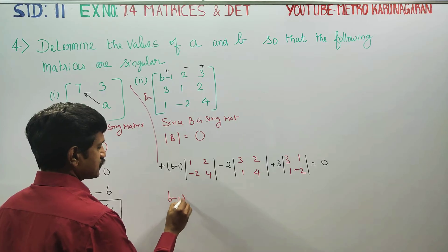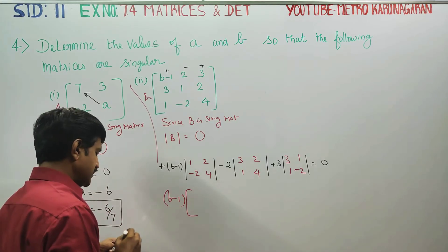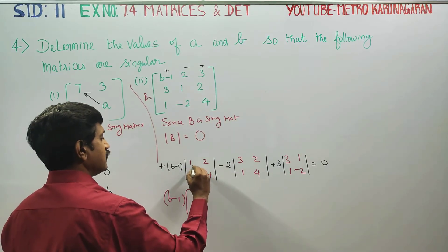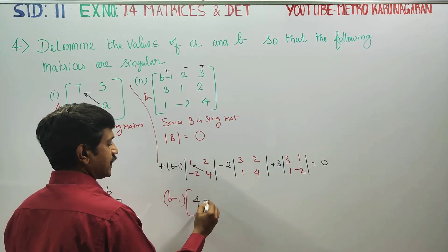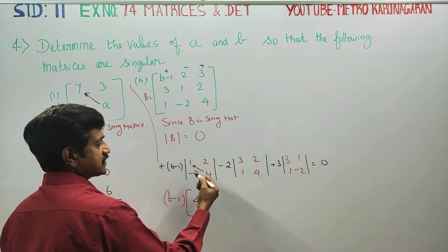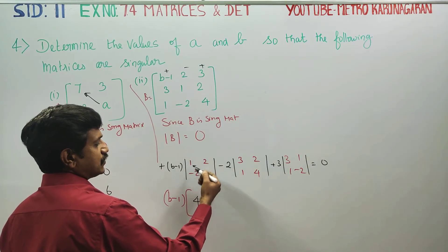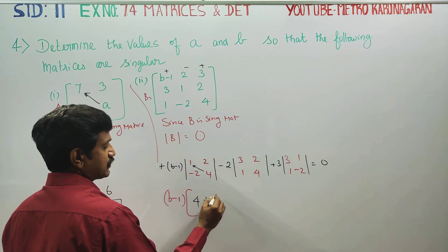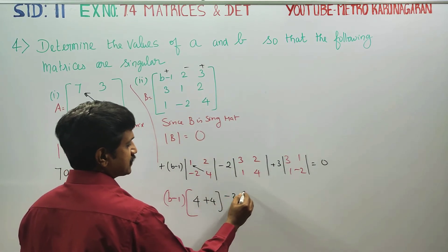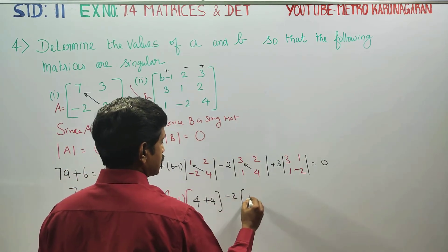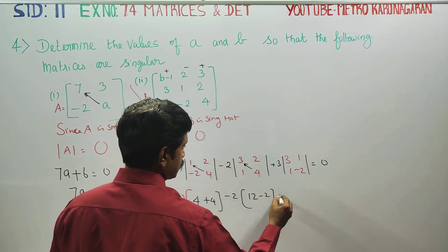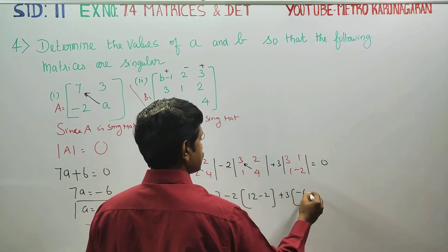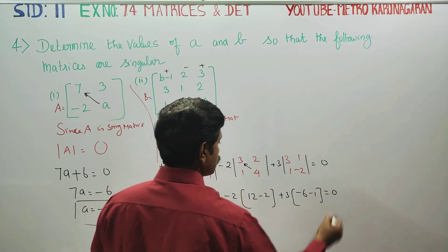Now computing each minor — right-hand side minus left-hand side: the minor of (B minus 1) gives 4 minus (minus 4), that is 4 plus 4 equals 8. The minor of (minus 2) gives 12 minus 2, which is 10. The minor of 3 gives minus 6 minus 1, which is minus 7. So we have (B minus 1) into 8, minus 2 into 10, plus 3 into minus 7, all equal to 0.